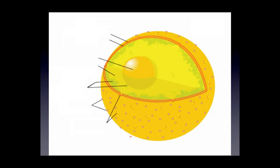Here is a lovely diagram of the nucleus and its sub-organelles. These organelles include the nuclear envelope, consisting of an outer and inner membrane; the nucleolus, located in the center of the nucleus; and the nucleoplasm, which is a gel-like substance between the nucleolus and nuclear envelope.